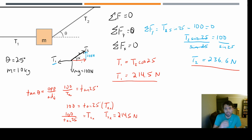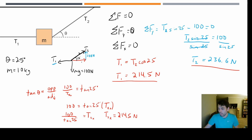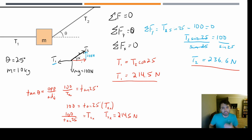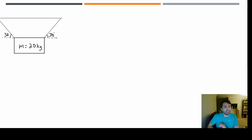There are lots of different ways to solve these problems using different trig functions. Students often get confused when they see these problems, but remember: if we're at rest, net force is zero in every direction. Components to the right must equal everything to the left, and everything down must equal what goes up. It's not too bad. Let's try one more problem.